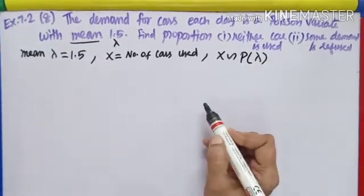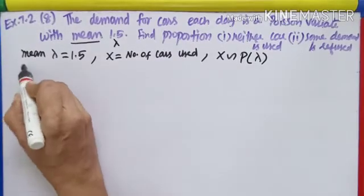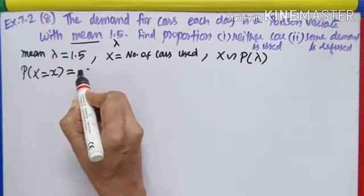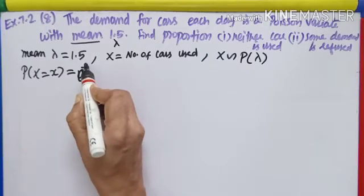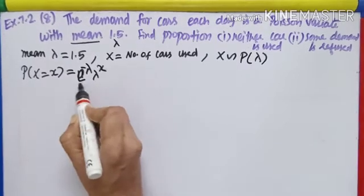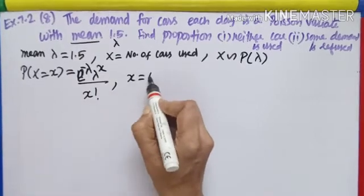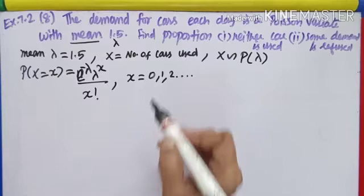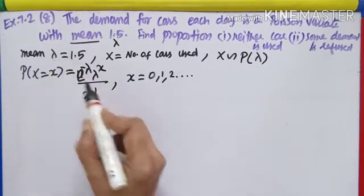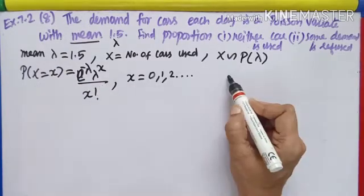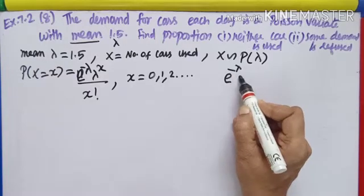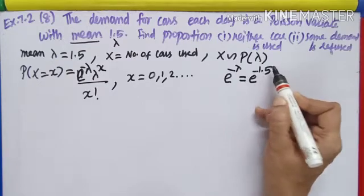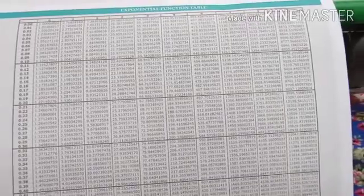The Poisson distribution formula is: P(X = x) = e^(−λ) · λ^x / x!, for x = 0, 1, 2, and so on. In this question lambda is known, so I must find out e^(−lambda), that is e^(−1.5).